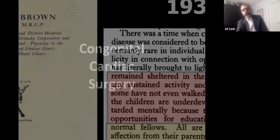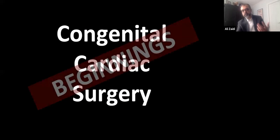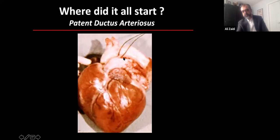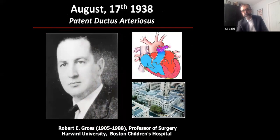The journey begins with cardiac surgery. It starts with the patent ductus arteriosus — a small blood vessel connecting the aorta to the pulmonary artery that every child is born with. Robert Gross at Boston Children's Hospital in 1938 took the first step, deciding to operate on the PDA and close it. This is outside the heart — you go through the chest, work on the PDA, and ligate it, but you're not inside the heart.